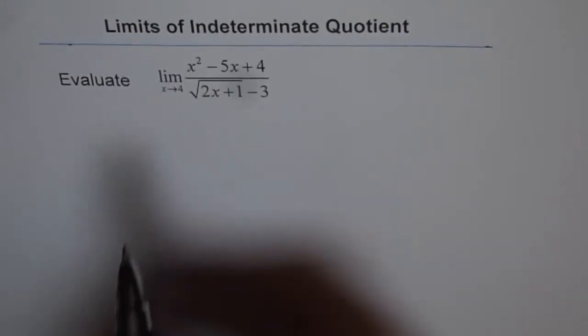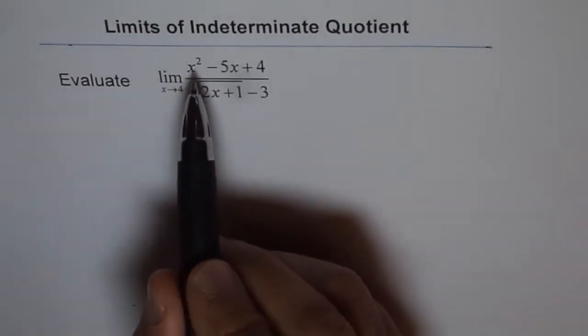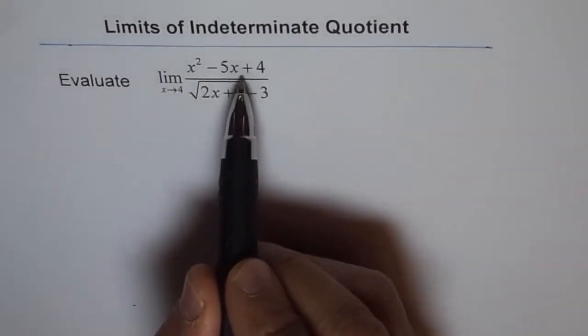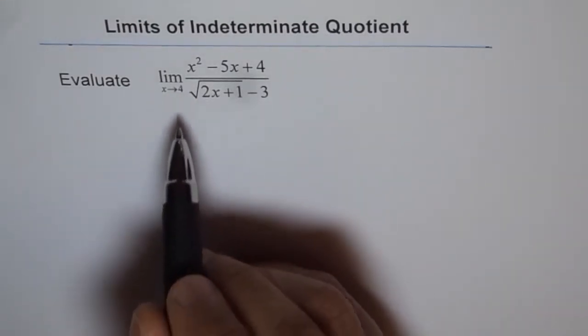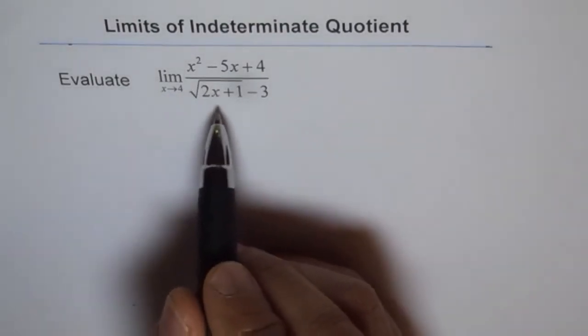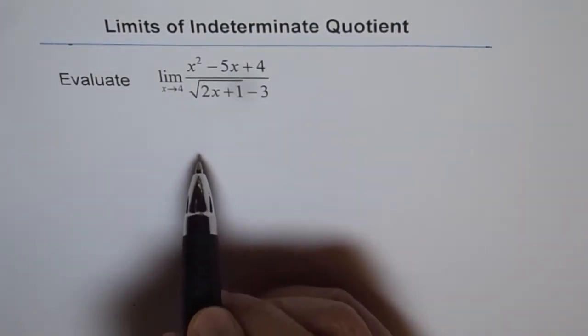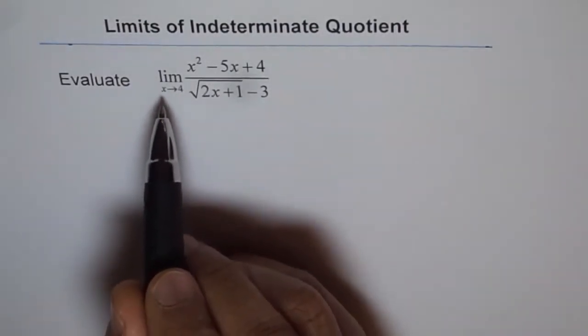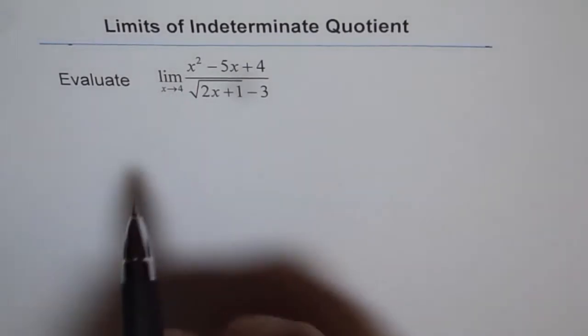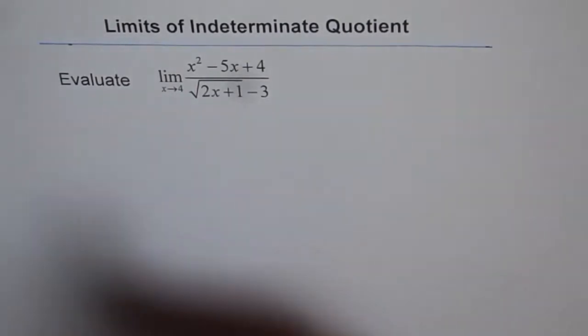Evaluate the limit of the function x squared minus 5x plus 4, divided by square root of 2x plus 1 minus 3, where x approaches 4.